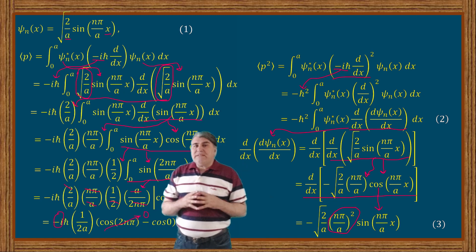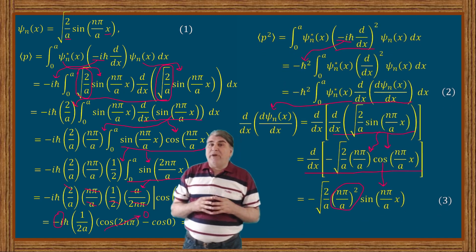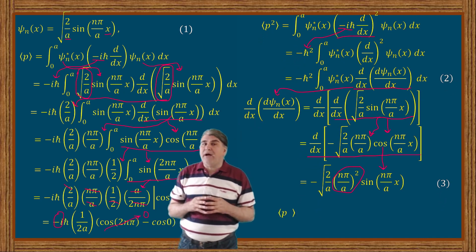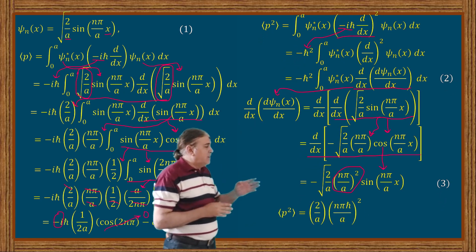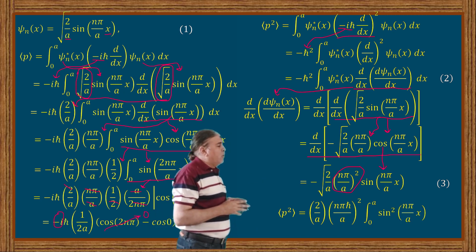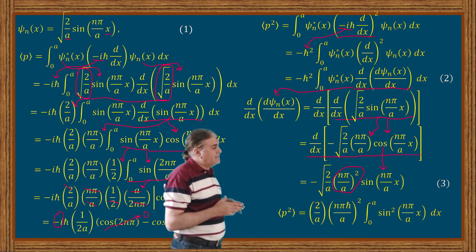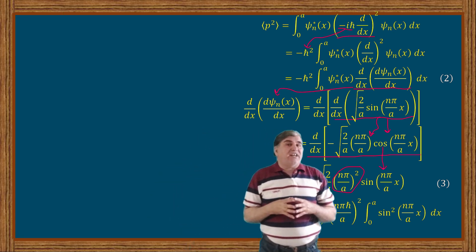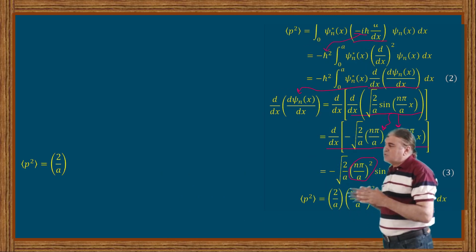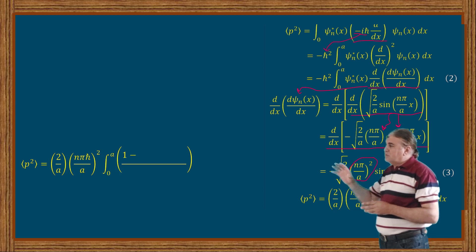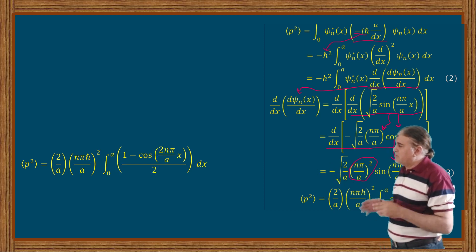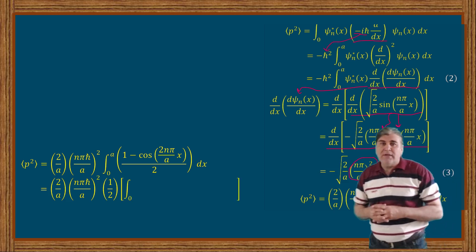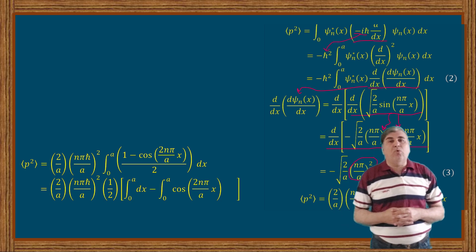Substituting equation 3 back into equation 2, the expectation value of the square of momentum can be written as (2/a) times (N pi/a) squared times the integral from 0 to a of sin squared(N pi x / a) dx, where the two sine functions have been multiplied and written as a squared sine function. Using a trigonometric identity, this integral splits into two parts, and the second integral resolves in the same way as the previous case, giving the final result of (N pi h-bar / a) squared.